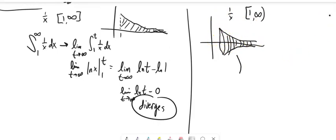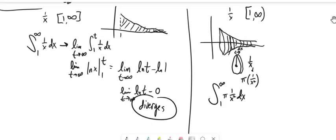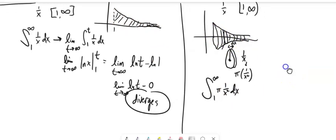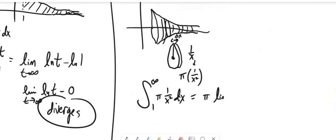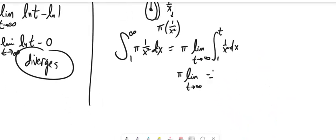If I take a disk out of here, I know that my radius is 1 over x, and this is my change in x. That means I need the area of a circle, which is pi r squared — so pi times the radius squared. If I square the radius, it's 1 over x squared. So this is going to be my integral from 1 to infinity of pi times 1 over x squared dx. I'll take the pi out and rewrite it as a limit to deal with that infinity, then take the integral.